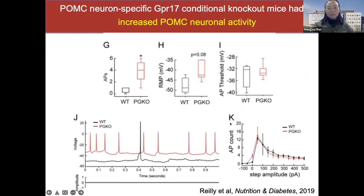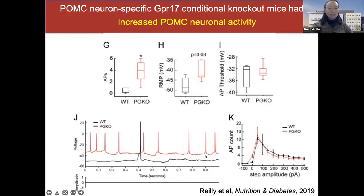POMC neurons, as they activate, can increase satiety. When we remove GPR17 from POMC neurons, we see increased action potentials, indicating more POMC neuron activity, and the resting membrane potential trends upward. This is a baseline recording — the red trace is the knockout POMC neuron — showing more action potentials. These neurons are otherwise normal, because when we inject a current, they fire similarly to wild-type.